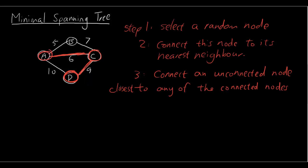And we're left with B so step 4 repeat step 3 until all the nodes are connected. All right so we're going to join up node B and the highlighted part is our minimal spanning tree.